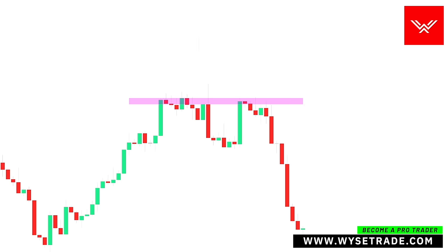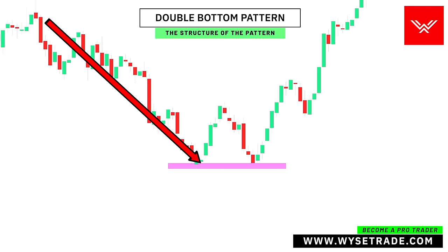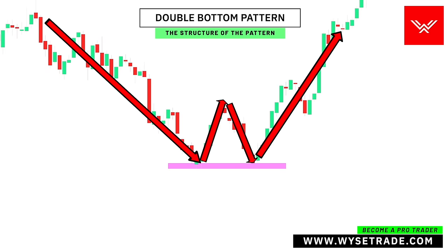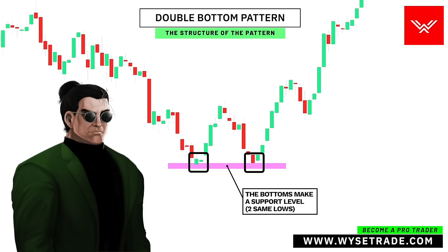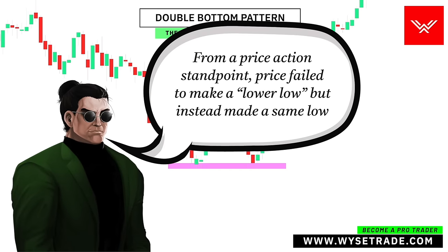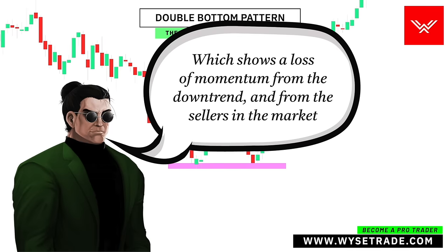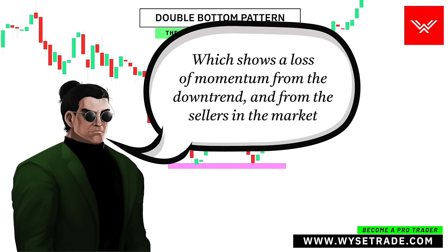The double bottom pattern: you first have your moving downtrend price that makes two same lows. The bottoms essentially make a support level. From a price action standpoint, price failed to make a lower low, but instead made a same low, which shows a loss of momentum from the downtrend and from the sellers in the market.